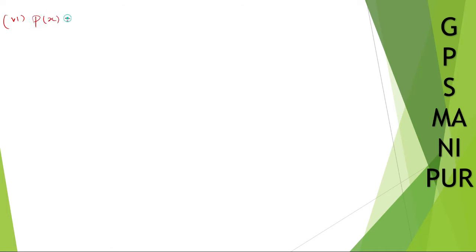So P of x is equal to x cube minus 4x square minus x plus 1 and D of x is equal to x square plus 2x. No, have I done any wrong question? Sorry. So P of x is equal to x cube minus 3x square plus 5x minus 3 and D of x is equal to x square minus 2.